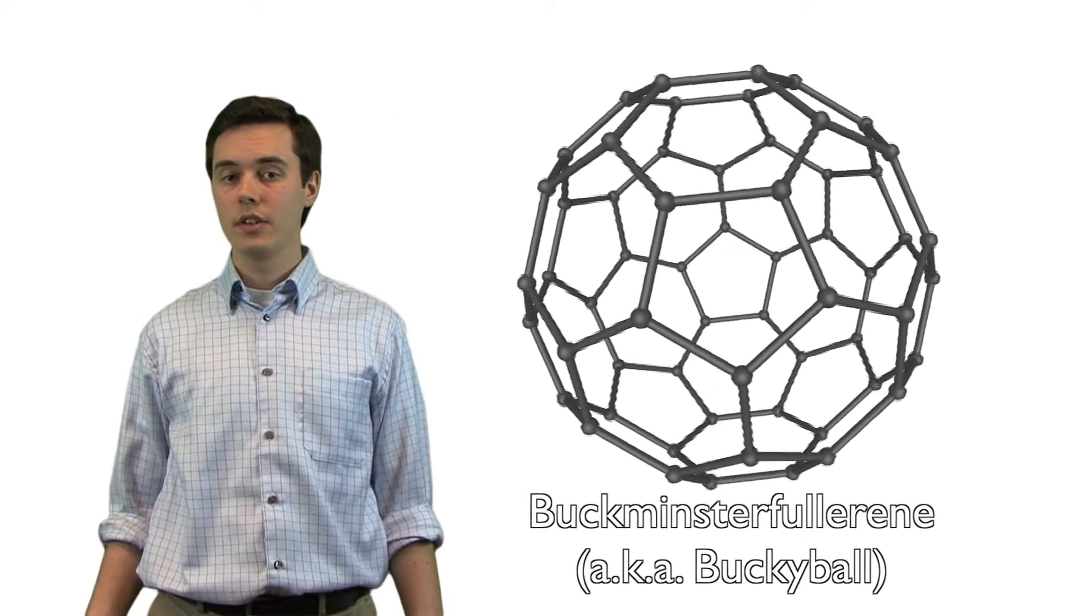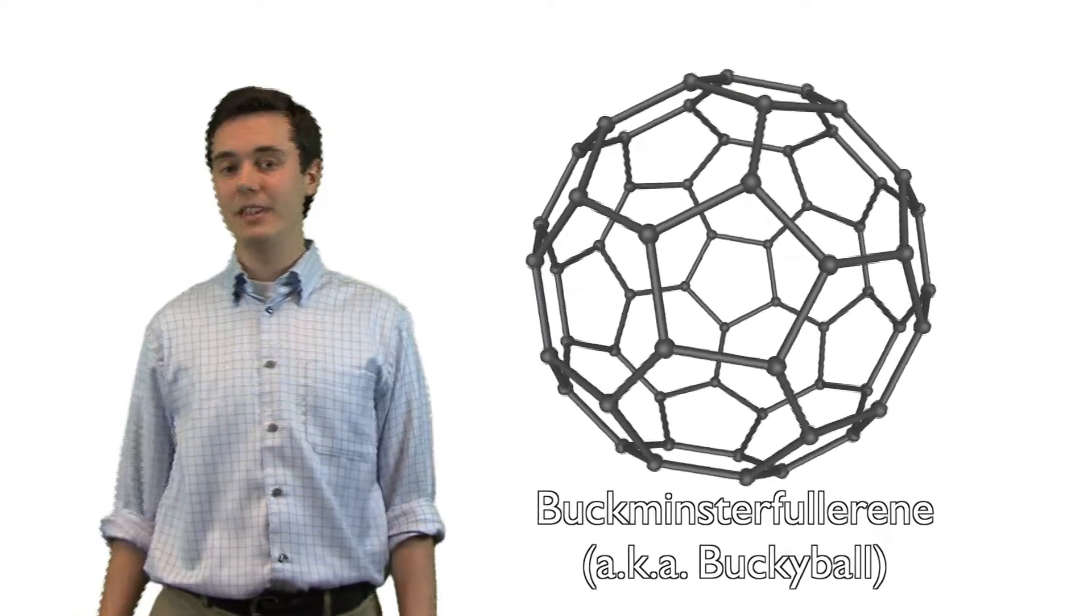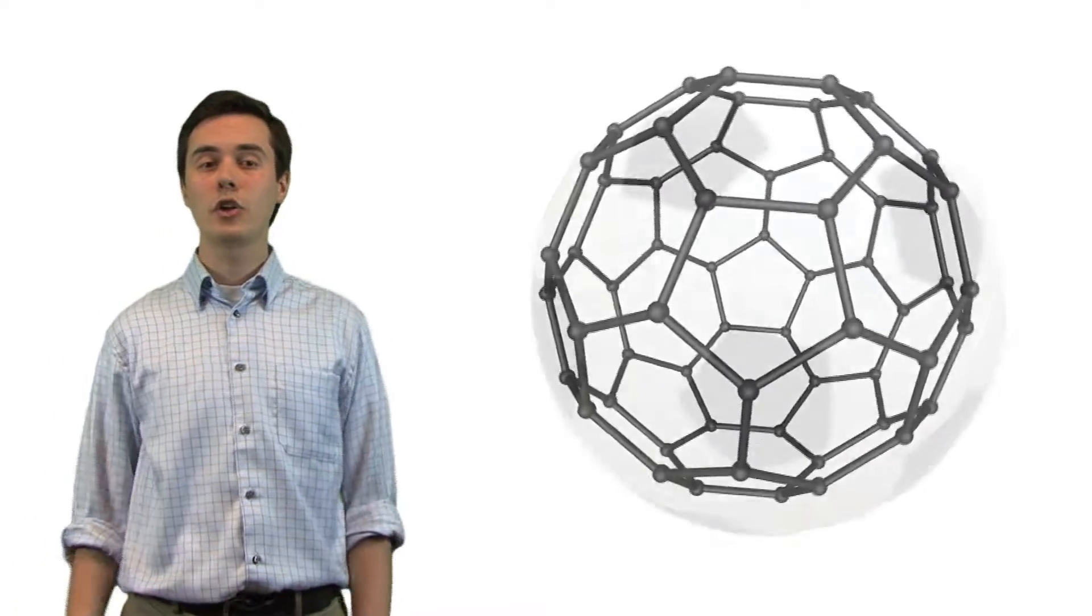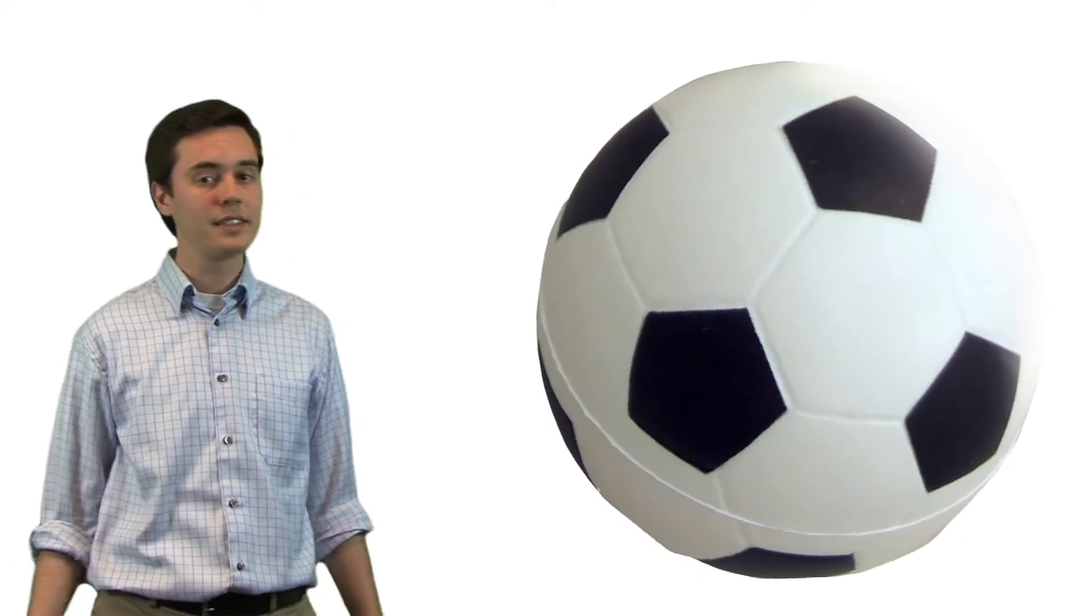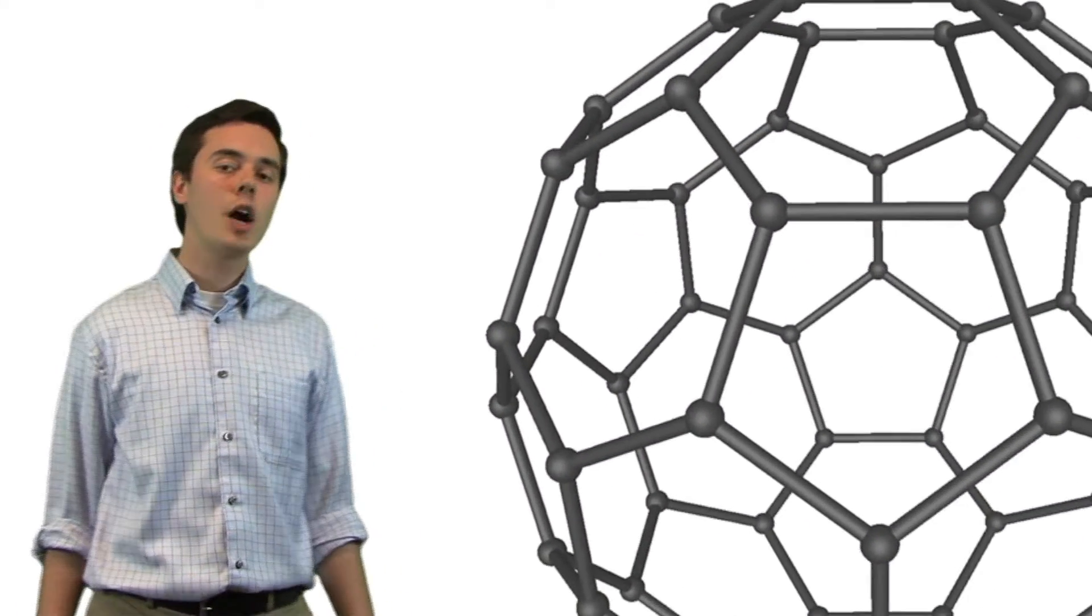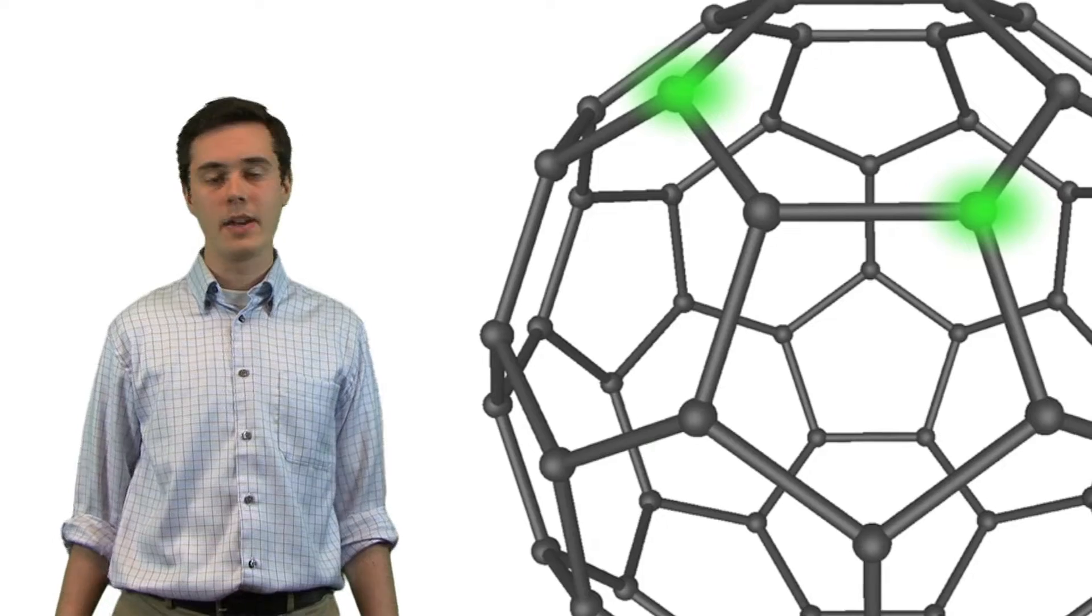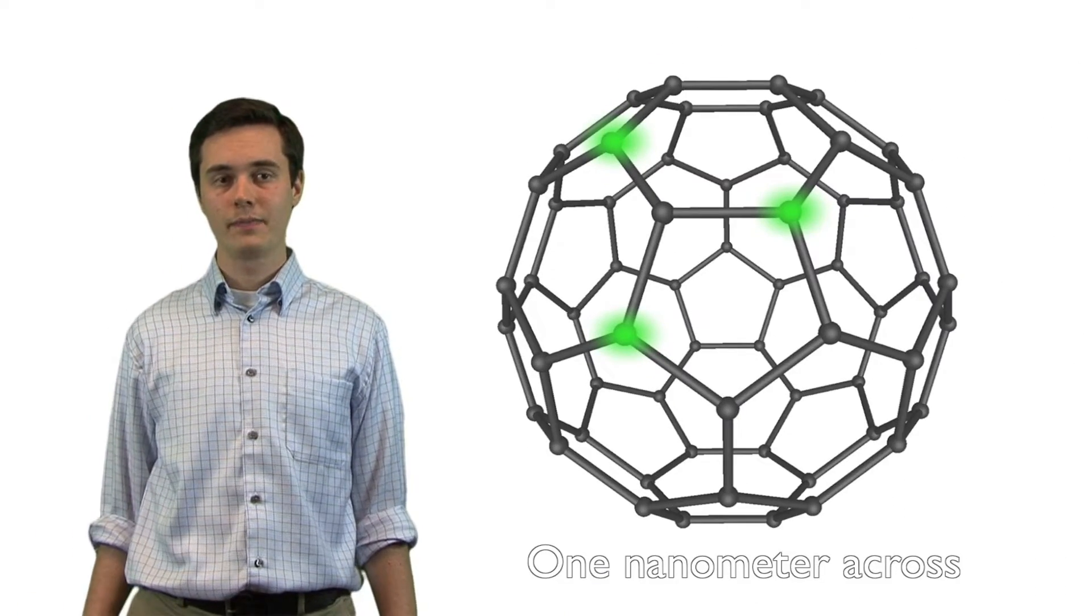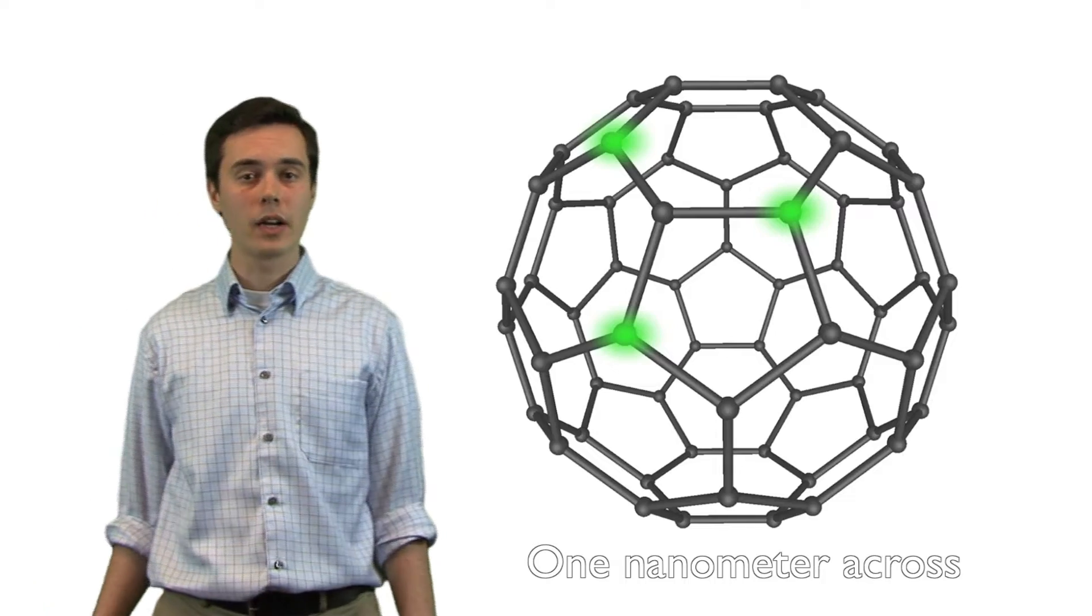Fullerenes, or buckyballs, are one of the nanostructures most commonly used by scientists. Some of these hollow, soccer ball-shaped molecules consist of 60 carbon atoms. Others contain more. Each carbon bonds to three adjacent carbon atoms to form a ball that's about one nanometer in diameter. Scientists hope to make buckyballs into medicine to block inflammation.